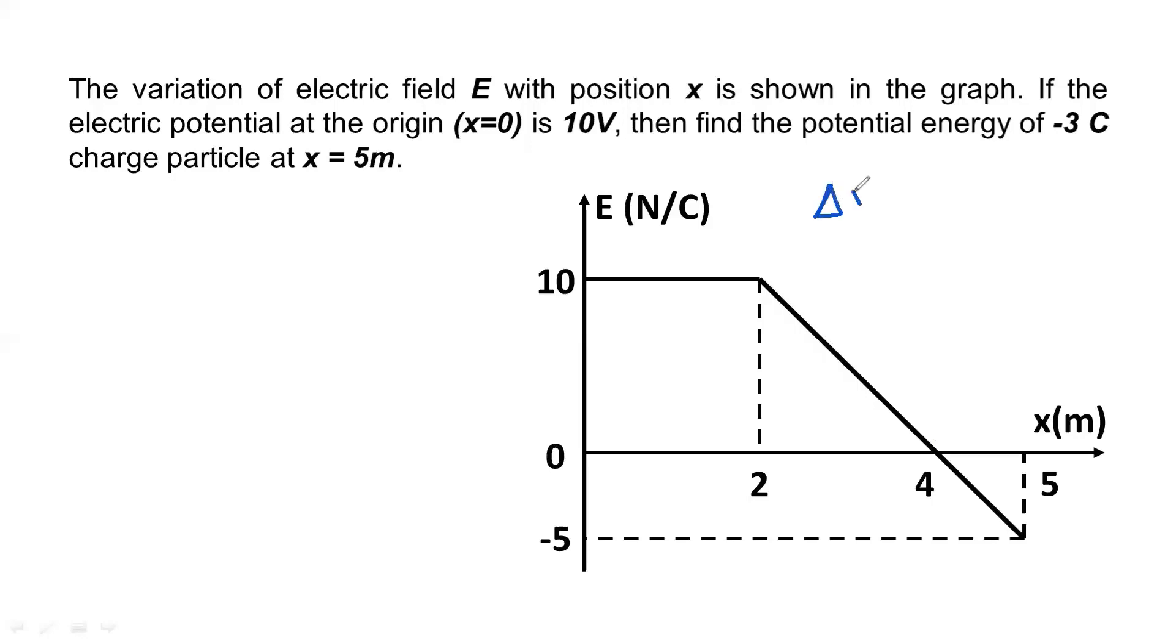So let's solve the problem. Now we have just seen delta V is equal to minus integral E dot dr from a to b. Now here is the thing, this form is 3-dimensionally valid, but this particular problem we just need single dimension.